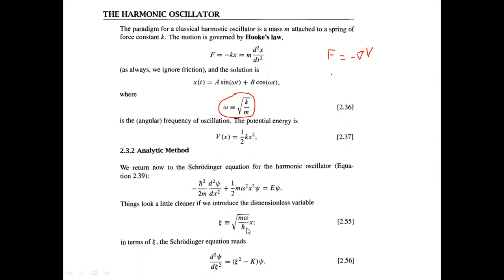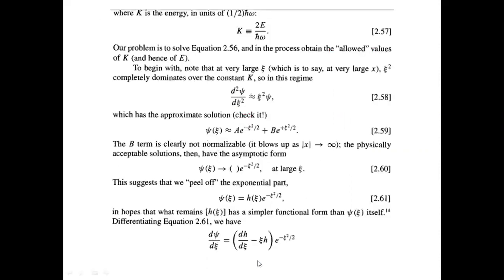We define a new parameter using this set of quantities. When we plug that into the Schrödinger equation, it simplifies to a cleaner form, where this K is nothing but 2E over ℏω — so this is the energy term expressed in units of ℏω/2.